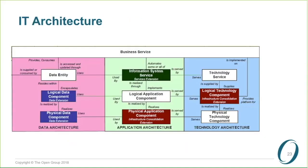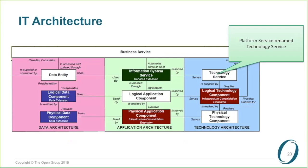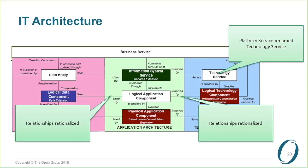In IT architecture, we've done some rationalization. First, we've changed 'platform service' to 'technology service,' reflecting that technology architecture is more than just the provision of APIs. More significantly, we've rationalized the relationships so there are now relationships at the conceptual level, the logical level, and the physical level. Technology service now exists for a purpose — in TOGAF 9.1 there didn't appear to be any relationship that meant we needed platform service, which was an error. It's altogether tidier, neater, and more consistent.